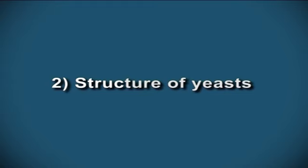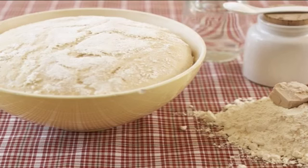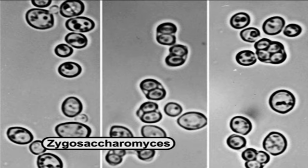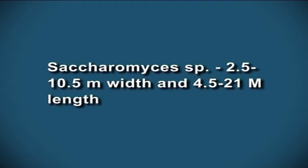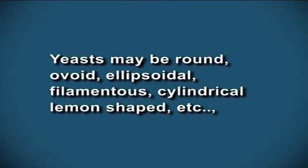Now we will know about the structure of yeasts. Yeasts are another predominant group of microorganisms in foods. Many yeasts are useful for food preparations, for example wine and bread. Some yeasts are responsible for food spoilage due to their metabolic activities, for example Zygosaccharomyces. The shape and size of yeast varies depending on the genus. For example, Saccharomyces has a width of 2.5 to 10.5 microns and a length of 4.5 to 21 microns, whereas Candida tropicalis has a width of 4 to 8 microns and a length of 5 to 11 microns. Yeast may be round, ovoid, ellipsoidal, filamentous, cylindrical, or lemon-shaped.